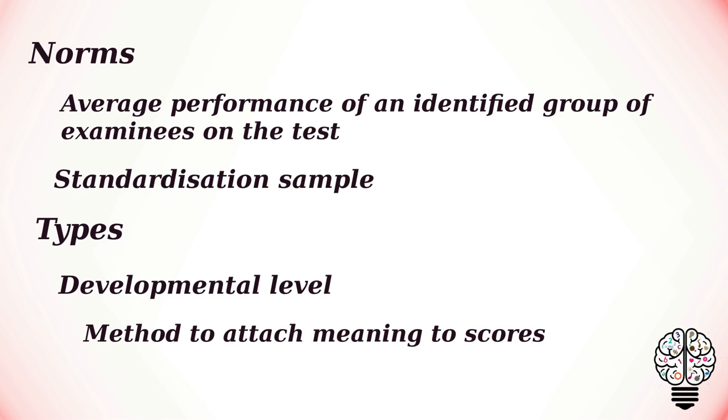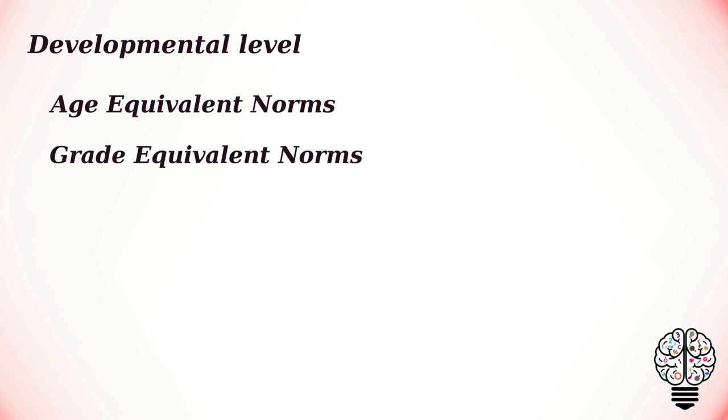Developmental level norms are a method to attach meaning to scores and to indicate how far an individual has progressed during the normal developmental path. The two types of developmental level norms are age equivalent norms and grade equivalent norms.